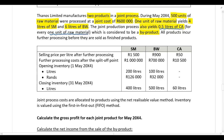Note that it's 0.5 liters of CA for every one unit of raw material. We are also now told that all products incur further processing before being sold as finished products. In the previous example, the two joint products could either be sold at the split-off point or processed further. Now all products will be processed further.